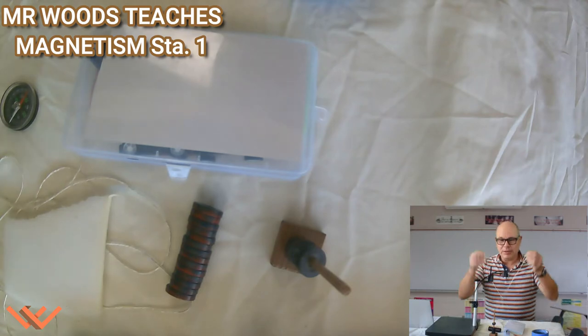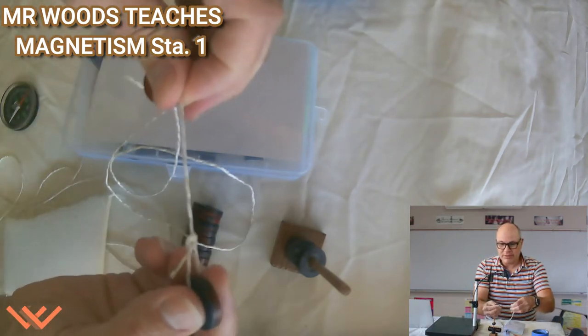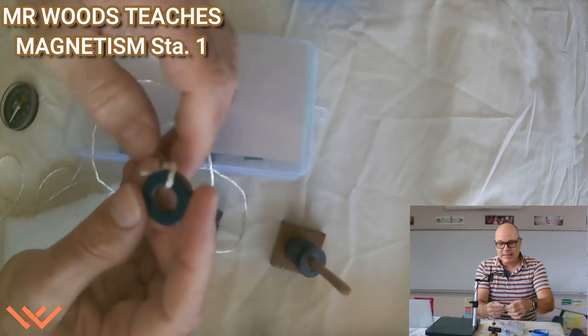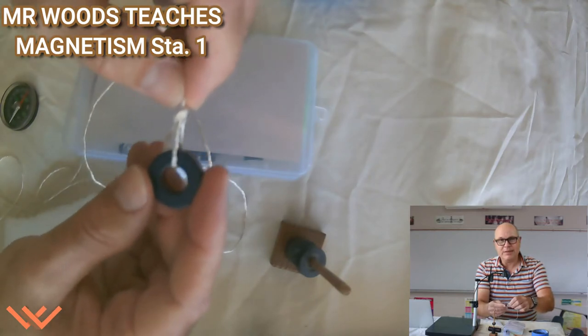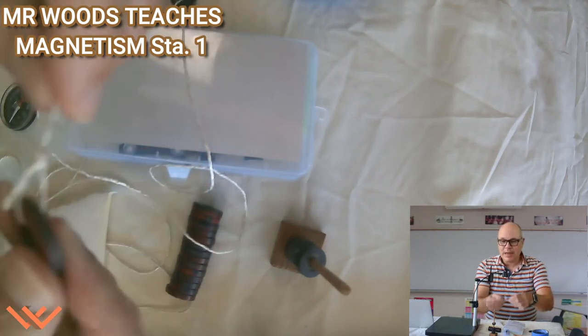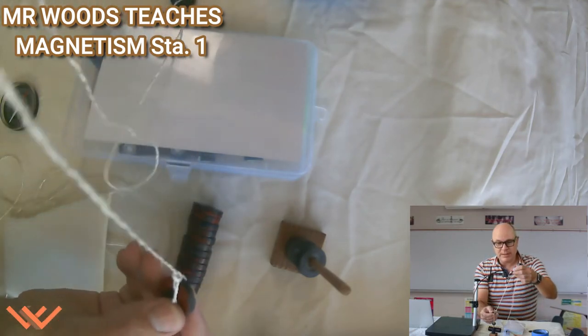First thing you need to do is to take that string, so we have the string, and tie it a loop through the magnet. See how we did that through the hole? That's what we need to do to get prepared for the experiment today.